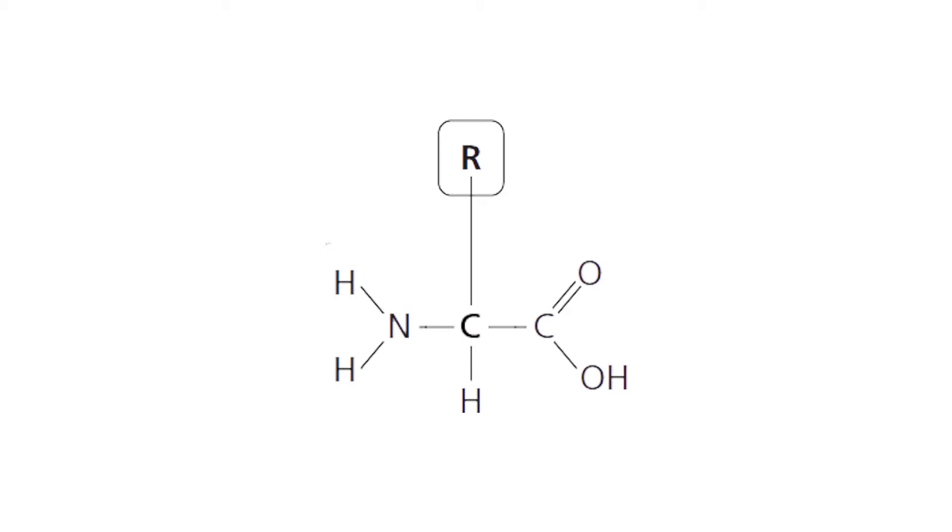At the center is an asymmetric carbon atom called the alpha carbon. We call it asymmetric because it's bound to four different groups of atoms.